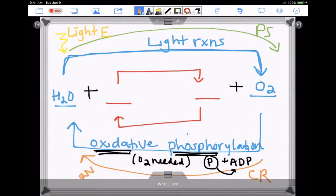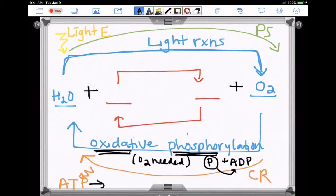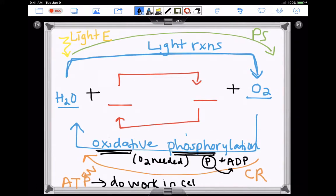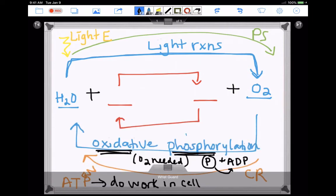That's an output here. It's a molecule, but it's an energy output ATP, and ATP's job is to go do work in the cell. So that's ultimately the light energy is transferred into this, and then that is transferred into the ATP. Oxidative phosphorylation just means oxygen dependent, putting phosphate onto ADP to make ATP.